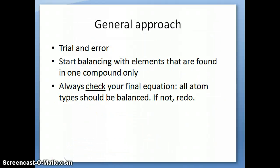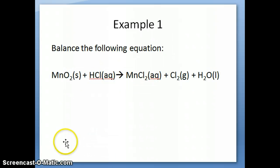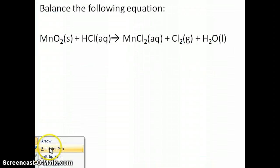So this slide shows you a general approach you should use in balancing equations. First off, it's really a trial and error type process, but you can make it a little bit more systematic, a little simpler if you start balancing elements that are found only in one compound. And then one thing that's always important to keep in mind with balancing is you always want to check your final equation because all the atom types should balance, should have the same number. If you don't have that, then you need to redo your balancing. I'm going to work through a quick example to show you how to balance the following equation.